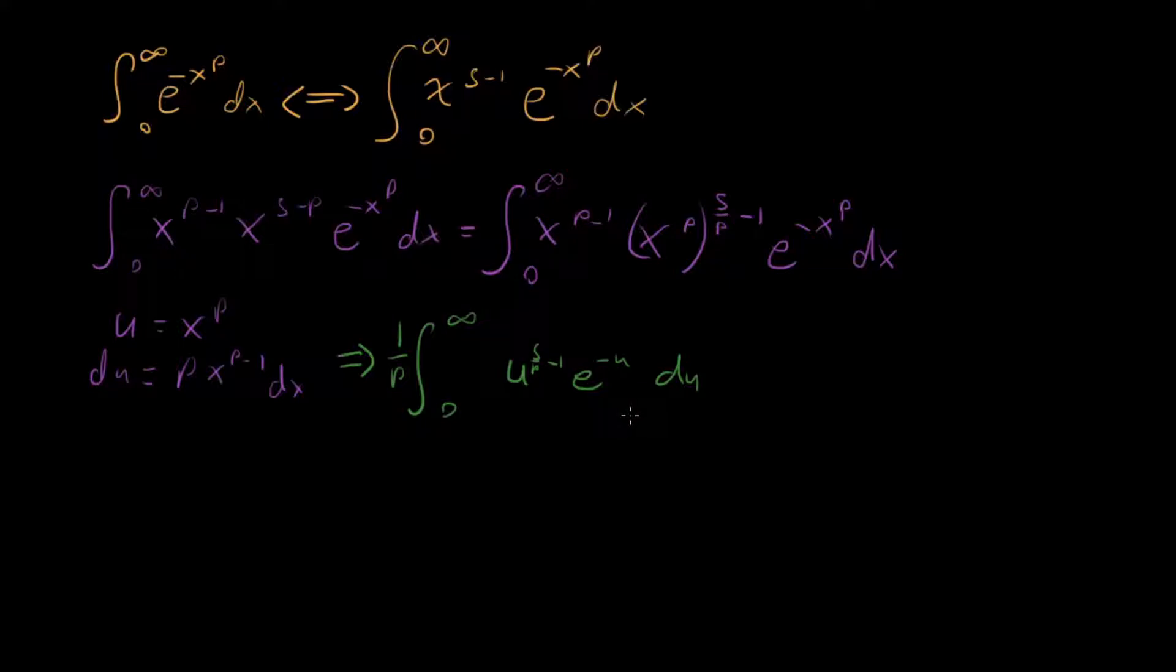And hopefully this integral is, lights are going off in your head because this integral right here is exactly our integral for the gamma function. Our gamma function is gamma of z integral 0 to infinity with the argument being x to the z minus 1 e to the minus x dx. Boom. And so we see this integral is exactly the same in the same form as this with our z being equal to s over p. And so then we see that this whole integral right here is equal to 1 over p gamma of s over p.